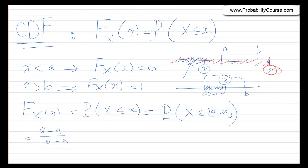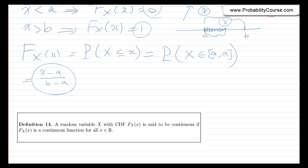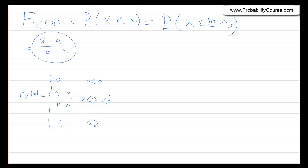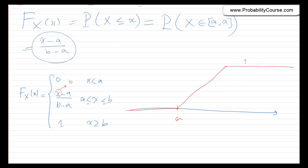To summarize, F_X(x) = 0 for x < a, equals (x − a)/(b − a) for a ≤ x ≤ b, and equals 1 for x > b. Plotting this: it starts at 0, rises linearly until it reaches 1 at x = b, then stays at 1. That is the CDF of this random variable.